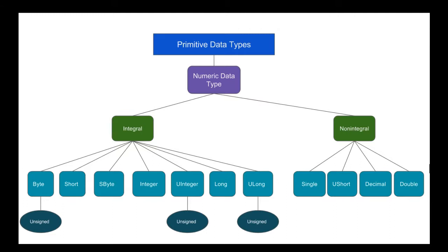The byte data type is a small natural positive number that ranges from 0 to 255. Its storage allocation is one byte and it is usually used for small values such as a person's age. The short data type holds two bytes of storage allocation and its value ranges from negative 32,768 through positive 32,767.